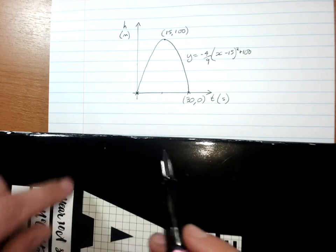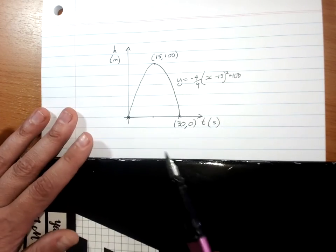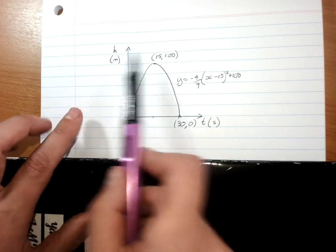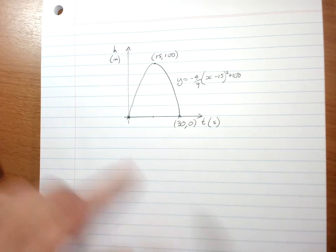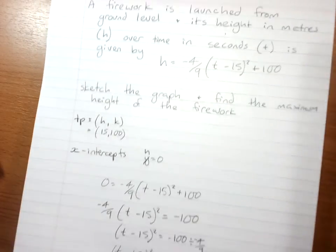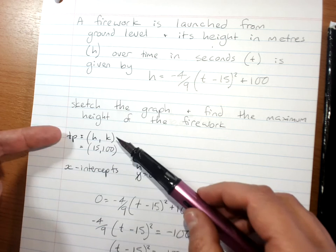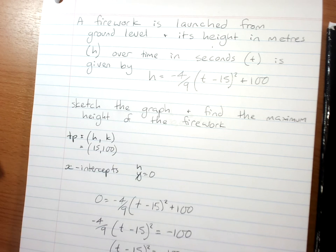And answer your question, which is how high does the firework get, which is 100 meters up in the air after 15 seconds. So the same approach for most of these questions. Only graph the meaningful part of the parabola. Look for your turning point and your x-intercepts.